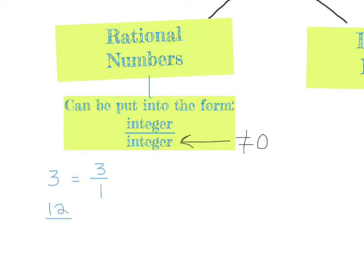Another example: twelve over six, which equals two, or two over one — rational. Another would be the mixed number four and one-seventh. We can put this into improper fraction form: seven times four is 28, plus one is 29, so we get 29 over seven. Integer divided by integer — rational.